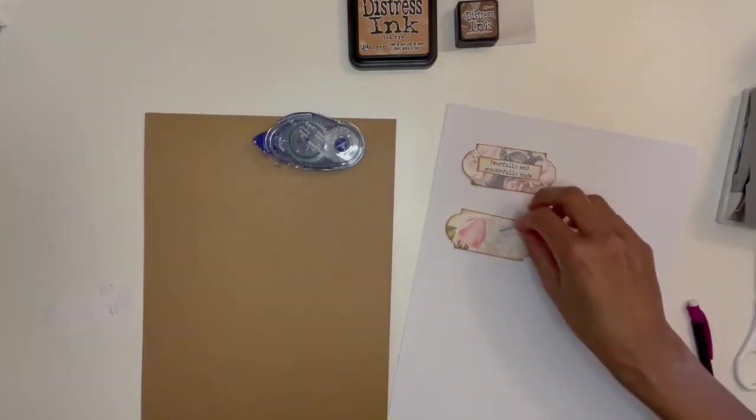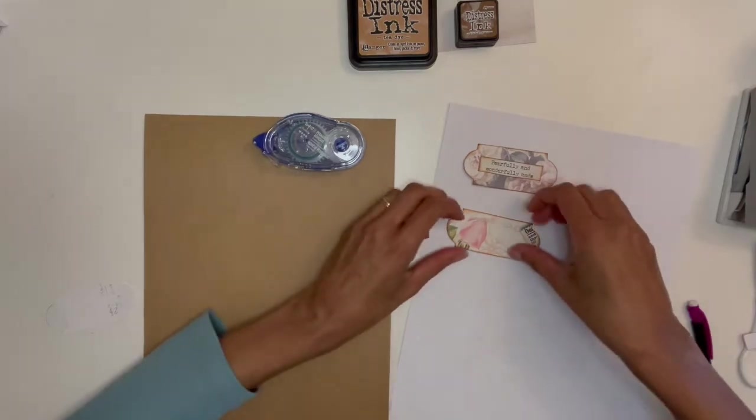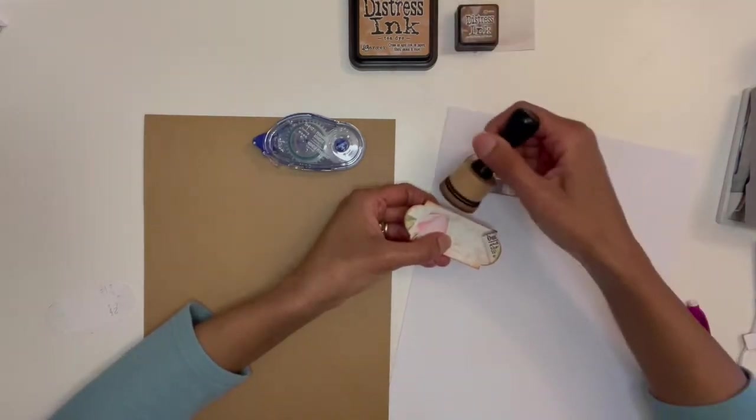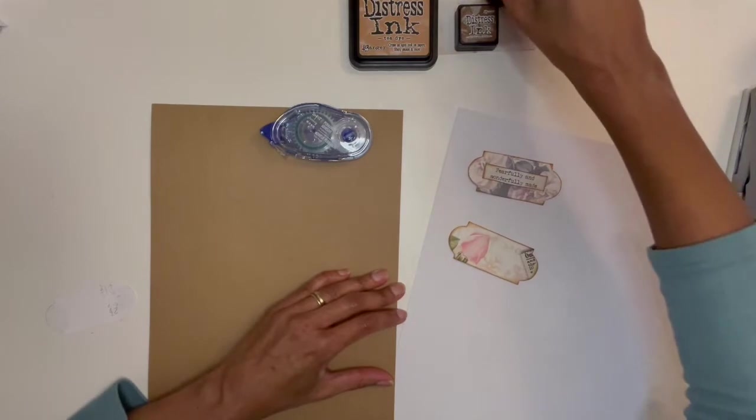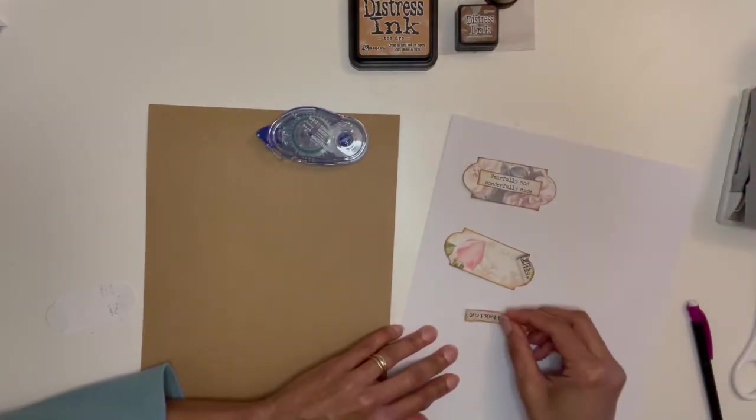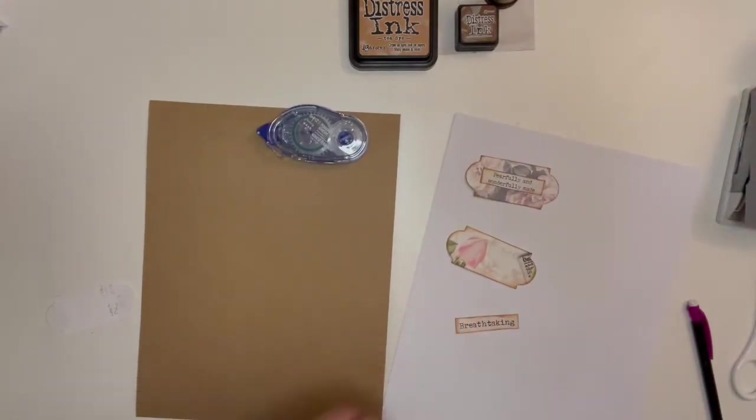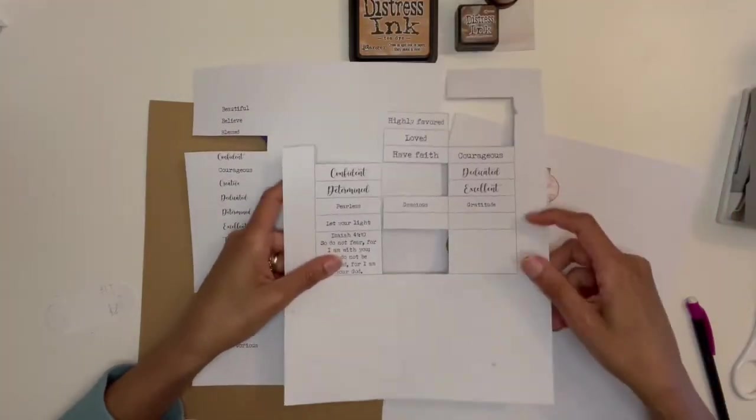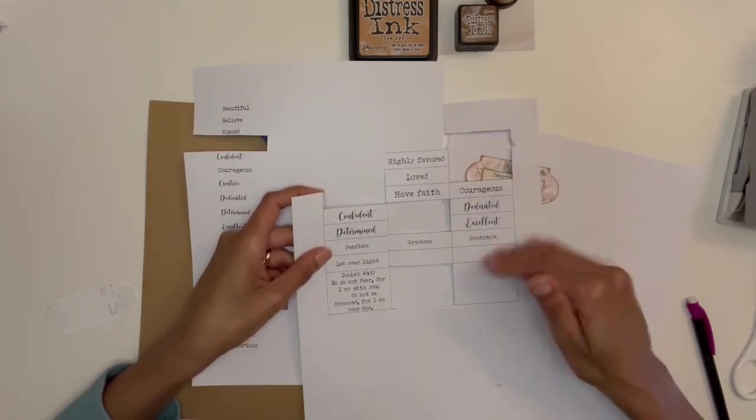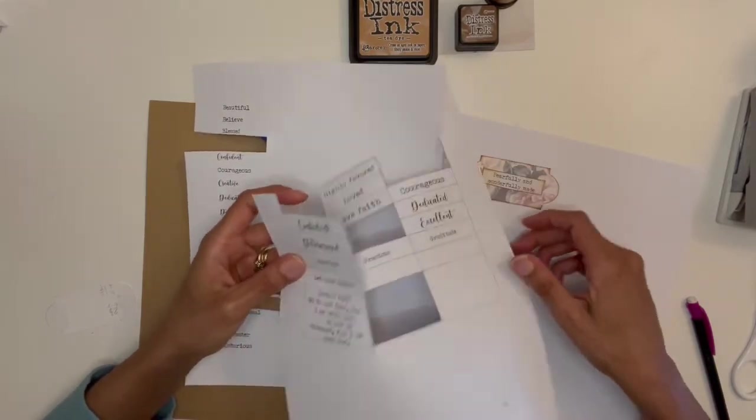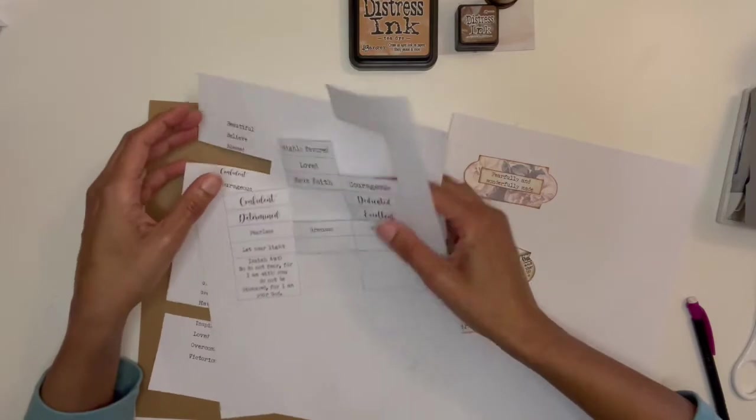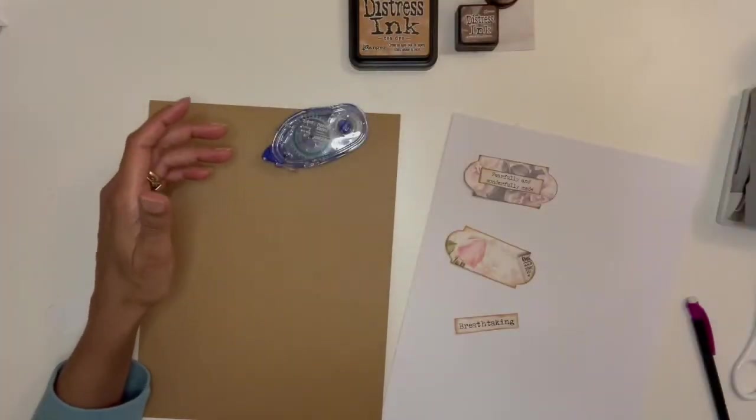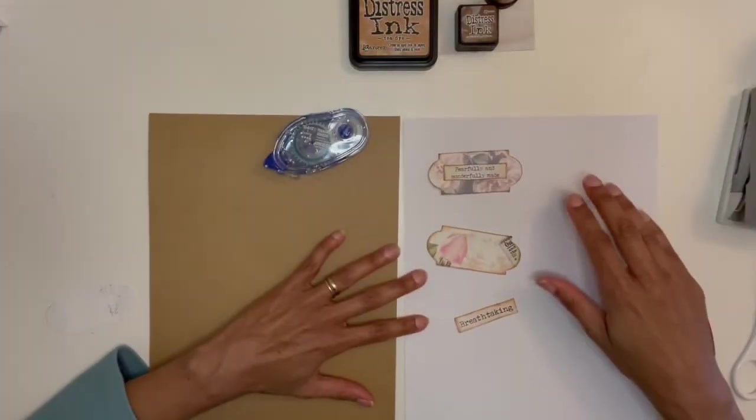Then what I did was I used my distress ink. And then, if you remember from the previous time we did some labels, as you can see I've been busy. You see all these cutouts? I created these in Microsoft Word. I used different fonts, different sizes. And remember, like the last time, if you don't have anything like that, if you have a book or catalog and you see words and phrases, you can cut those out.